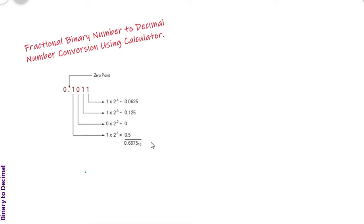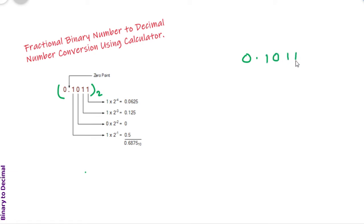So in this video I will show you how you can convert the fractional binary number into the corresponding decimal number using a calculator. Let's see here — we see the traditional way to convert the binary number into corresponding decimal number. Here the binary number is 0.1011, and we have to convert this binary fractional number into the corresponding decimal number.